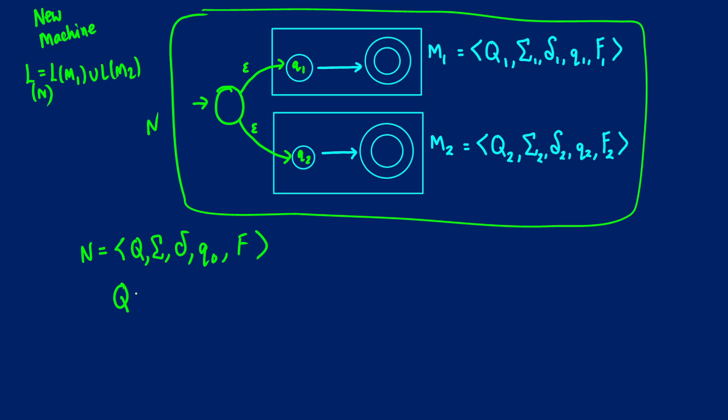Q is going to be everything that is in M1, so it's going to be Q1, union everything in M2, Q2. And we're also adding a new start state, so we're adding in Q0. That would be this bad boy right here. That is what that Q0 is referring to. That's the new state we're adding.